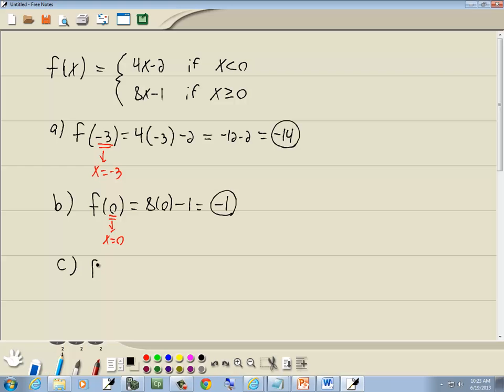And C, we want to find f(5). Again, whatever number's inside your parentheses is your x. So they're telling us x is 5. We'll plug that into our conditions: 5 is less than 0, and 5 is greater than or equal to 0. We see which one is true. Well, 5 is greater than 0, so we'll plug it into this piece.